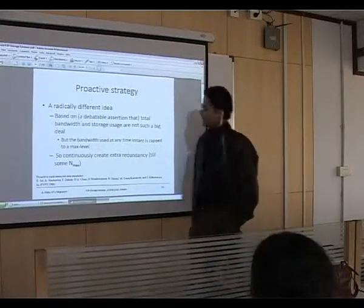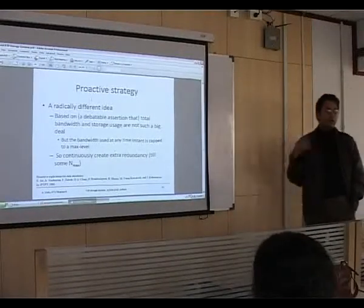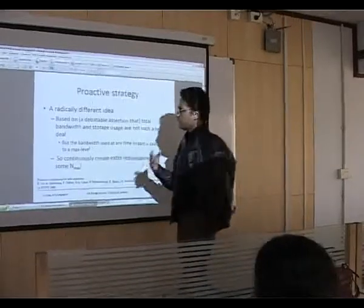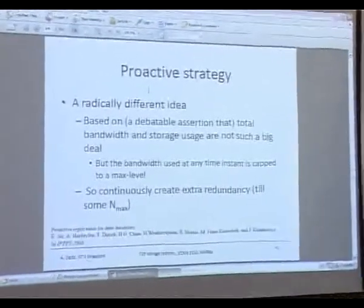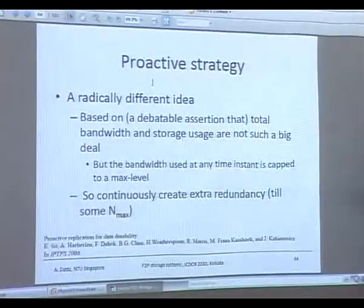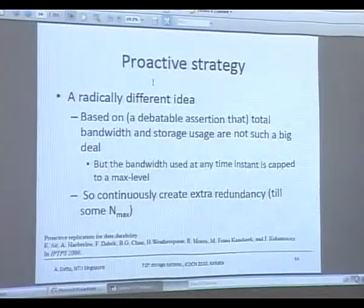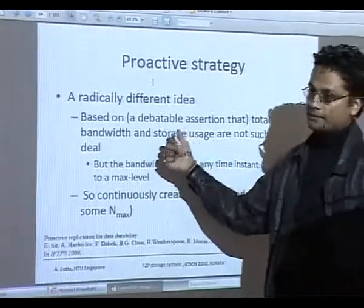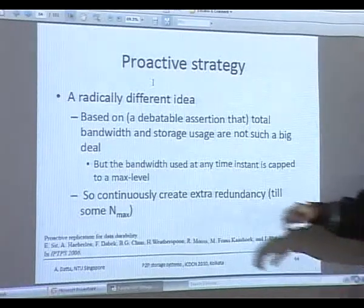Surprisingly, somebody came up with another good idea — radically different from what we had seen so far. What we had seen are all reactive techniques: if things go wrong, we do something, and how can we do it more efficiently. This new strategy says that if bandwidth is available — and again, these are systems built with the assumption of a flat-rate pricing scheme — if I have the bandwidth, why not use it anyway, even if I don't need maintenance? Why not keep adding more redundancy?